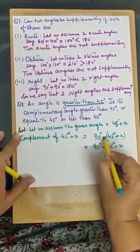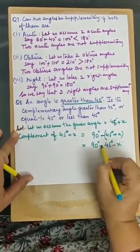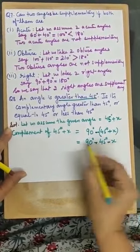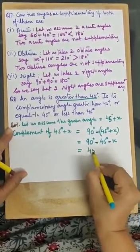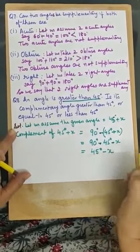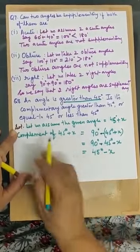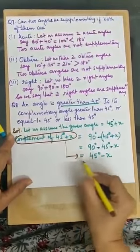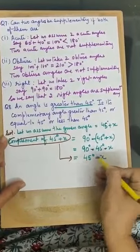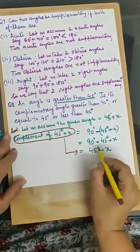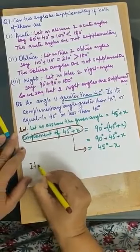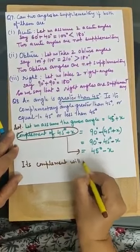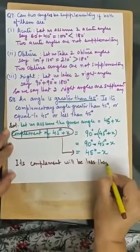What happens is minus plus is minus — you already did this in class 6. So 90 minus 45 degrees is 45 degrees, and the minus x comes. The complement of (45 + x) is (45 minus x), meaning it is less than 45 degrees. So we conclude that its complement will be less than 45 degrees.